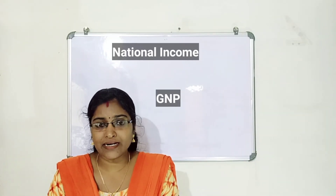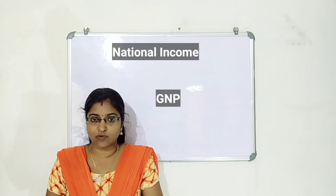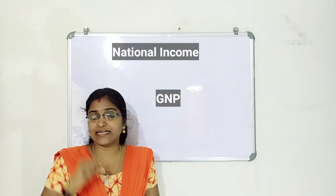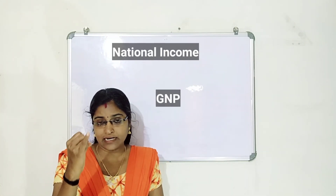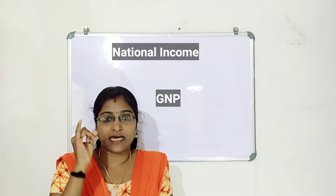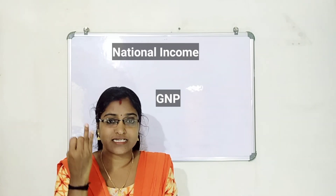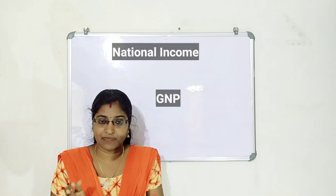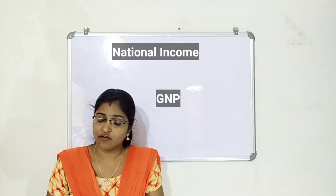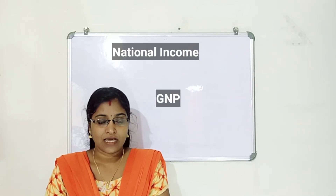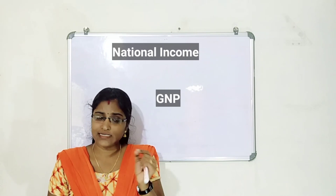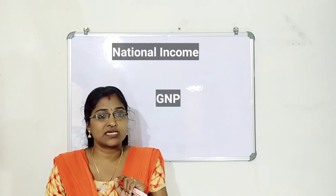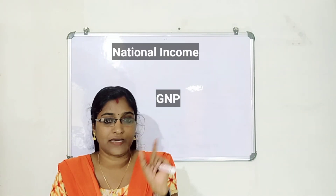One example is given in your textbook: a shirt. A shirt is an example of a final product. That shirt was made with the help of cotton, cloth, buttons, and stitching charges. At last, the shirt is the final product. The money value of the final goods and services produced is the GNP.